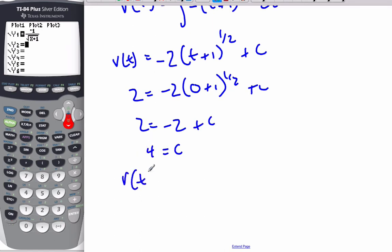And so the velocity function is equal to negative two times t plus one to the one-half plus four.